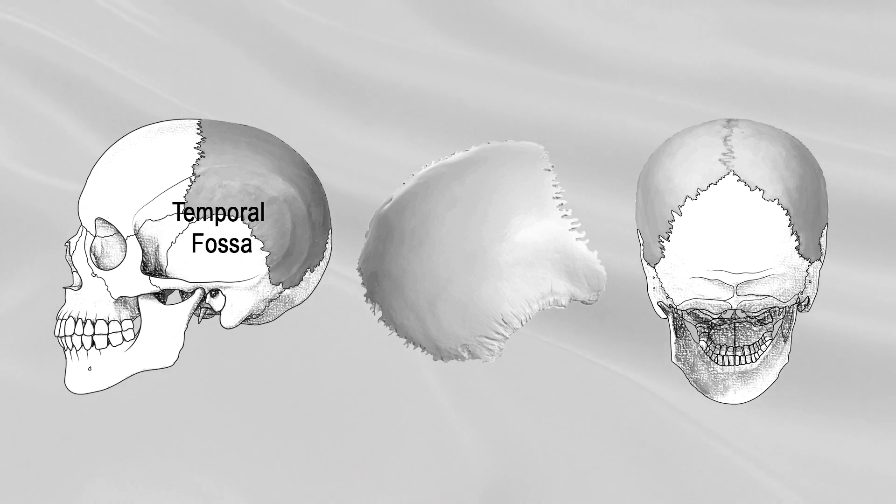At the back part, and close to the sagittal border, is the parietal foramen, which is not constantly present and is of variable size.